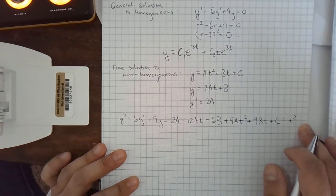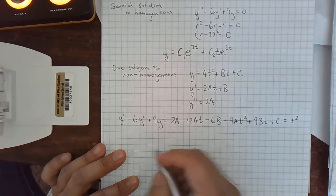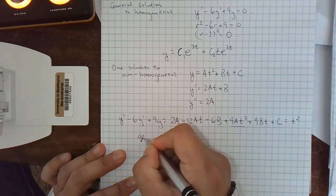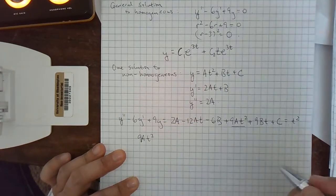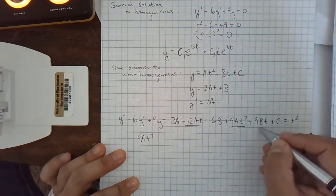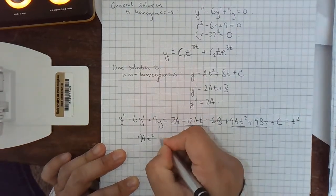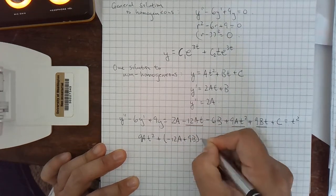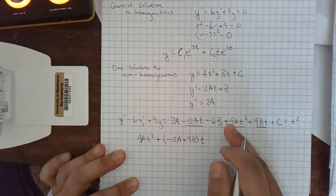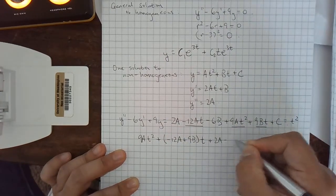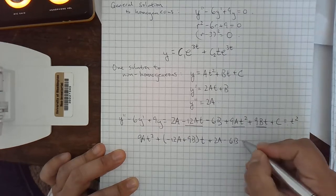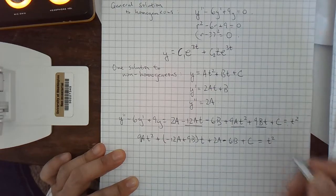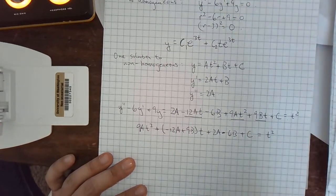Okay, how is all this going to equal t squared? They must be the exact same polynomial because it must be equal for all values of t. So let's just write it a little bit nicer. We have 9a t squared. What are the t terms? We have minus 12a t plus 9b t. Okay, so I'm just going to write plus negative 12a plus 9b times t. That's the t coefficient. And then the constant. We have the rest 2a minus 6b plus c. That's everything that's not underlined so far. That's a minus. Okay, equals t squared. And it really is 1t squared plus 0t plus 0, right?